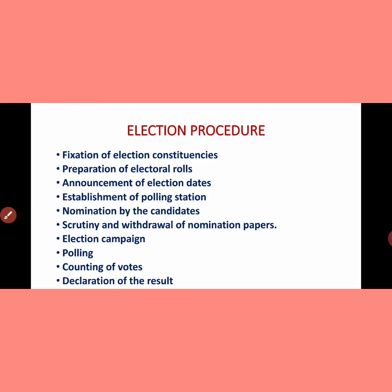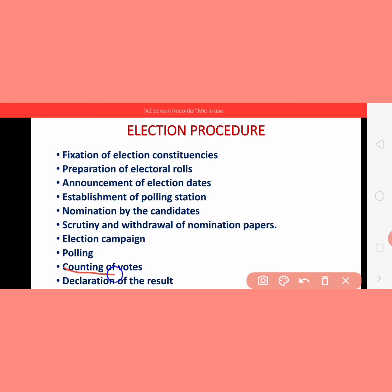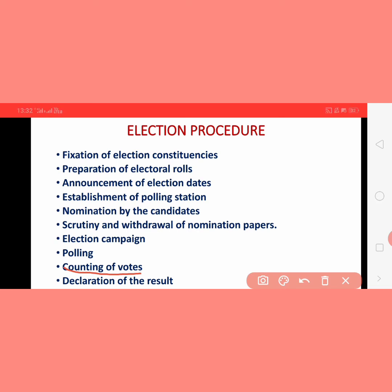When polling is done, the next step is counting of votes. After voting, the EVM machines are locked and sealed at the polling station, then brought to the Election Commission office. On a fixed date, votes are counted in the supervision of the returning officer. The agents of candidates who participated in the elections are also present there so that if there is any objection about the counting, they can point it out at that time.